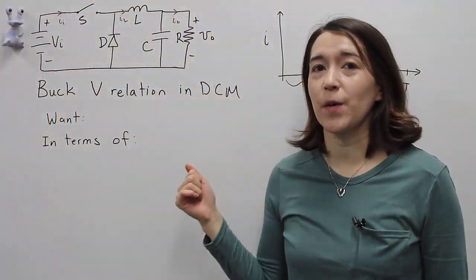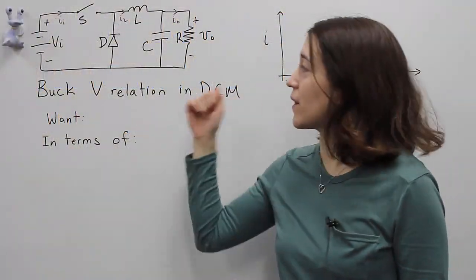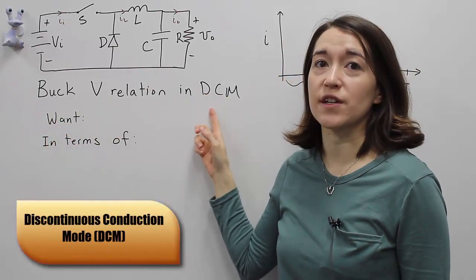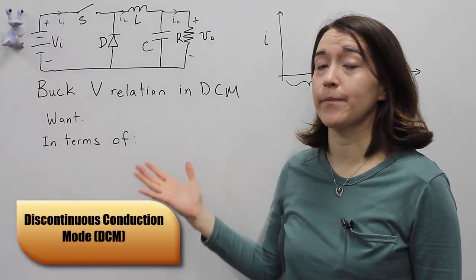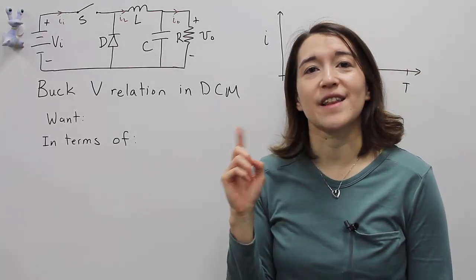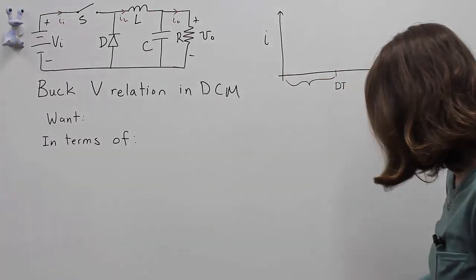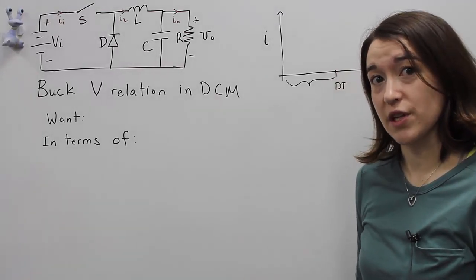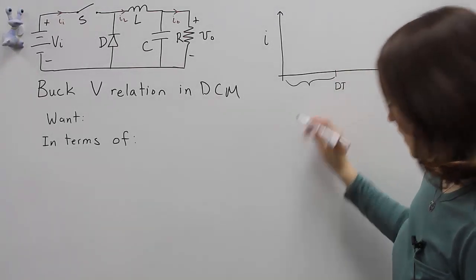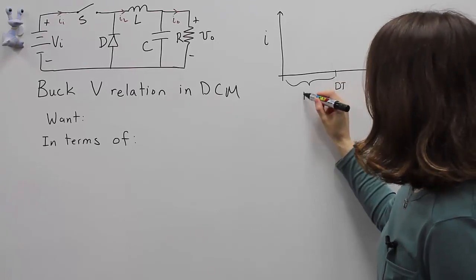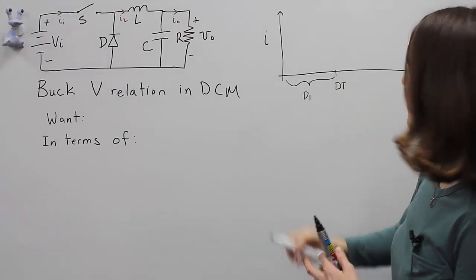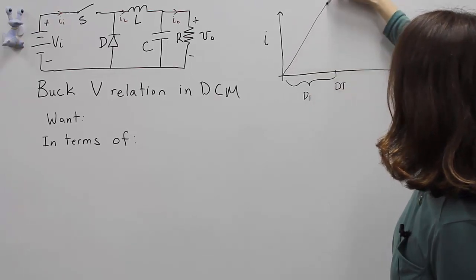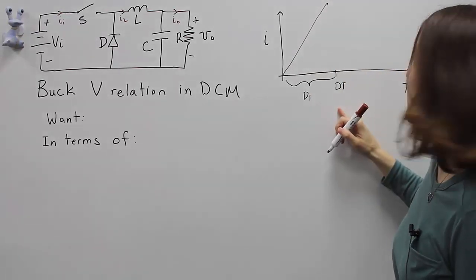In this video, we'll be talking about the voltage relation of a buck converter in discontinuous conduction mode, or DCM. We will first look at the inductor equation. So our inductor equation — we're in discontinuous conduction mode. During this period, we're going to call this D1, when the switch is on, we're going to be going up until we get to this point, D times T.